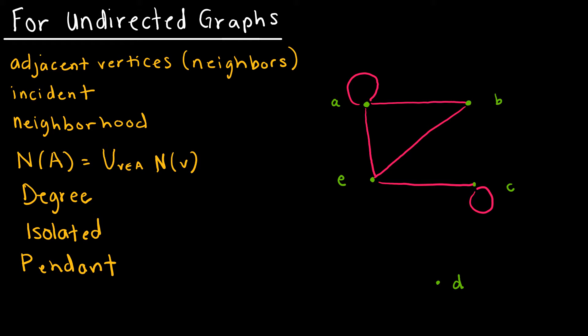We'll look at directed graphs in a few moments. The first is adjacent vertices, also called neighbors, and this one's kind of a gimme. Adjacent vertices are vertices that are connected by an edge. So A and B would be adjacent or would be neighbors, but B and C would not because B and C are not directly connected by an edge.